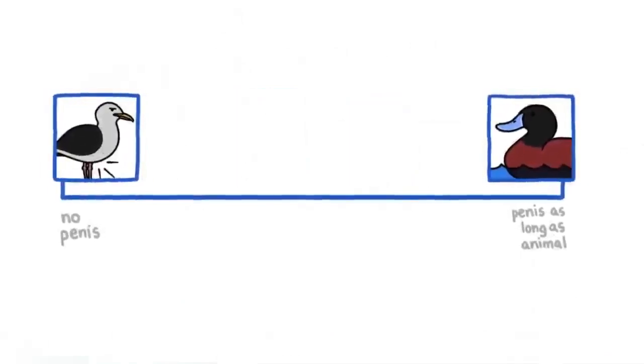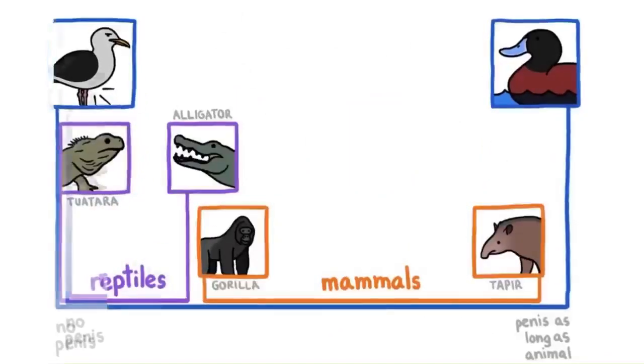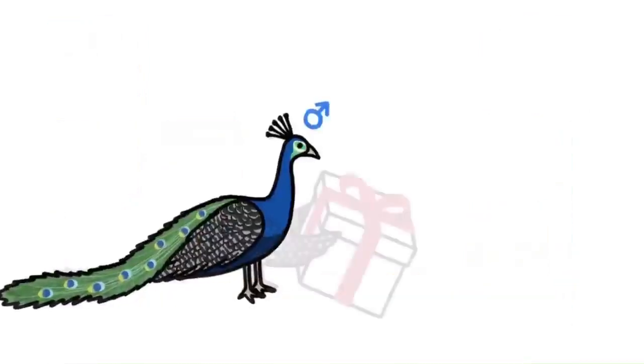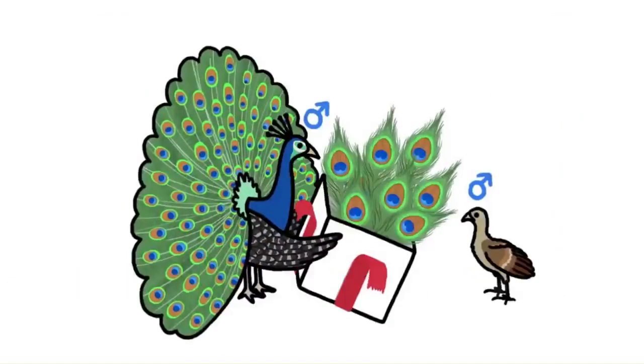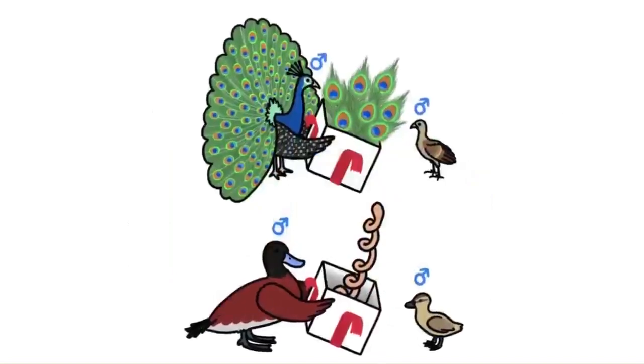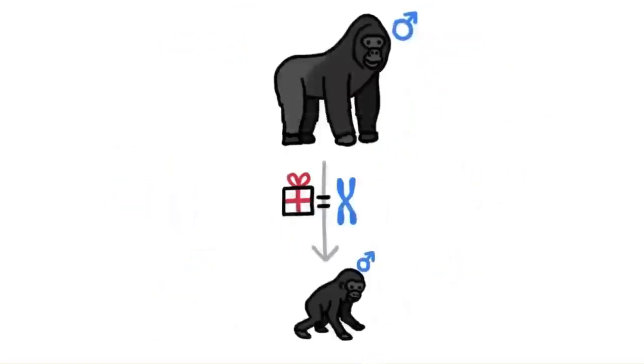And there are a couple key reasons why. For one, male birds are uniquely set up to pass helpful sexual traits directly to their sons, traits like showy, mate-attracting tail feathers or genitalia of certain dimensions. Animals generally hand these kinds of traits down through their sex chromosomes, but the sex chromosomes male mammals pass on to their sons is pretty tiny and has relatively few genes.